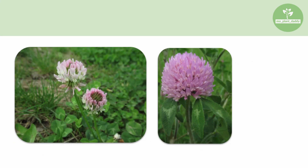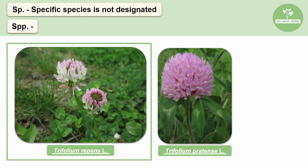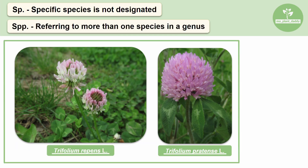Sometimes you may not be able to fully identify a species, or might want to refer to multiple species in a genus at once. Let's talk about the different ways you can write the word species: sp. or spp. To help explain this, let's use Trifolium repens (white clover) and Trifolium pratense (red clover). Sp. is used when the specific species is not designated — if we knew it was a Trifolium but didn't know its specific epithet, we would say Trifolium sp. If we wanted to refer to both species at the same time, we use the spp. ending, referring to more than one species in a genus, so we can just say Trifolium spp.